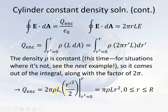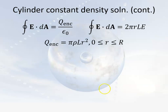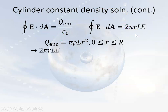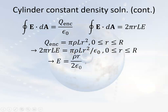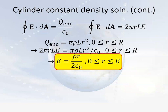So the enclosed charge is π·rho·L·r². According to Gauss's Law, the flux equals that enclosed charge divided by epsilon-naught. The flux is 2πrLE, so we have 2πrLE = π·rho·L·r² / epsilon-naught. The L's cancel, the pi's cancel, and for anything inside our real cylinder of uniform density, the electric field is E = rho·r / (2·epsilon-naught).